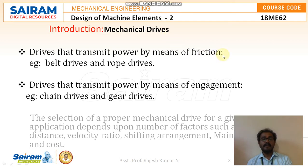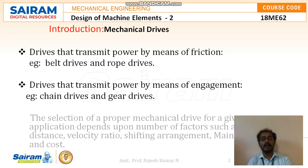Mechanical drives — we can call gears as mechanical drives. Drives that transmit power by means of friction are generally called belt drives and rope drives. But drives that transmit power by means of engagement are called chain drives and gear drives. The selection of a proper mechanical drive for a given application depends on factors such as center distance, velocity ratio, shifting arrangement, maintenance, and cost.